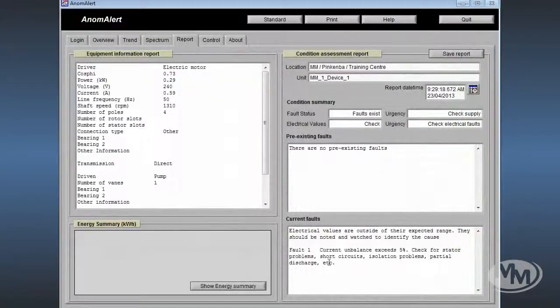Now back on the reports page of the Anomalert software, it can be seen that one fault has been reported. This is described by the unit as a current imbalance exceeding 5%.